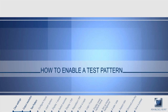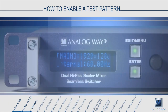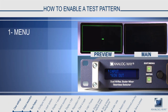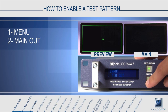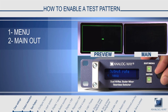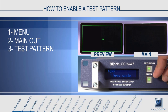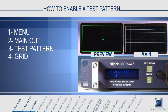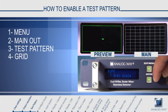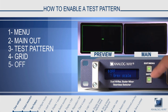How to enable a test pattern. To enable a test pattern, press menu and scroll down to main out. At the bottom of the output menu you will find test patterns. Enter the test pattern menu and choose a test pattern, such as grid. Press enter to choose the grid test pattern, and when you are done, press off to turn it off.